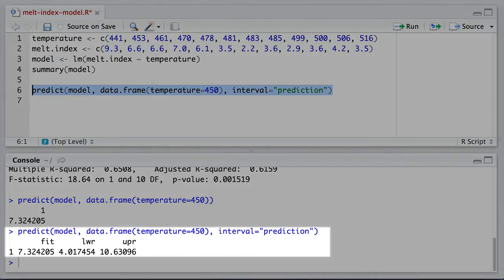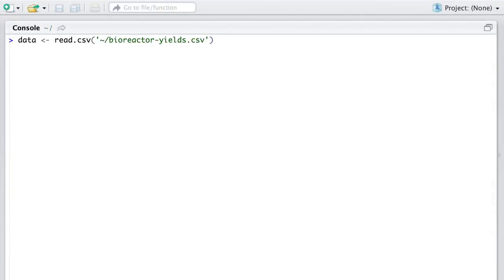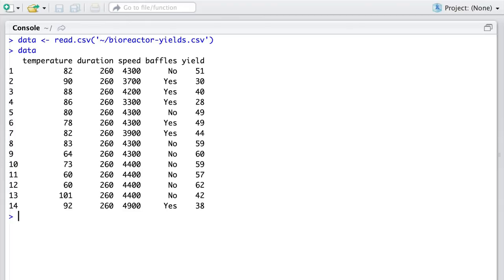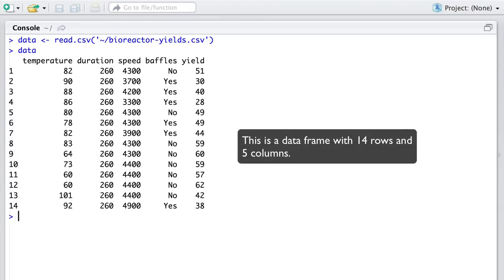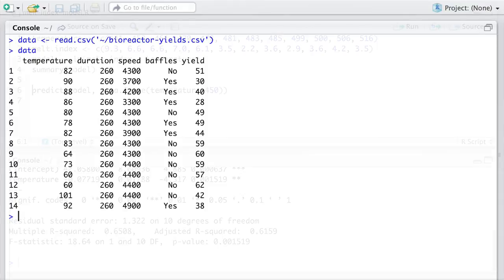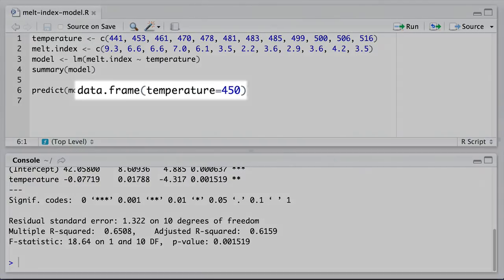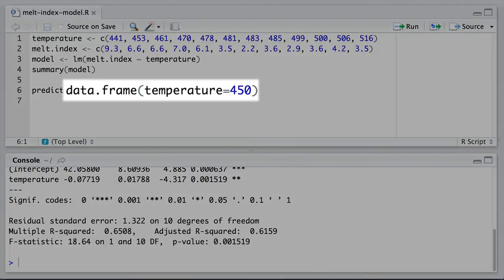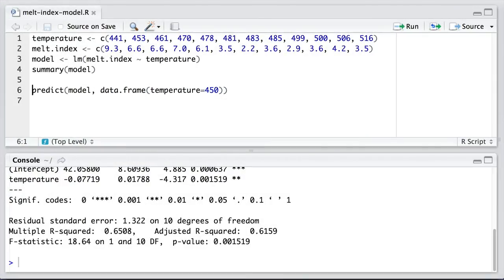Now for those of you that are wondering what a data frame is again, a quick recap is to recall that when you imported data into R, you created a data set with a column name and various entries in the rows that followed that column name. A data frame, as specified in this way over here on the screen, is actually creating a new data set for you with a single column and a single row of data. It's the smallest form of a data set you can create in R.